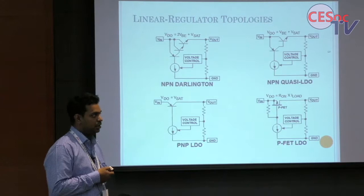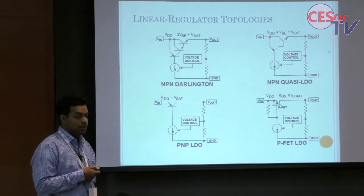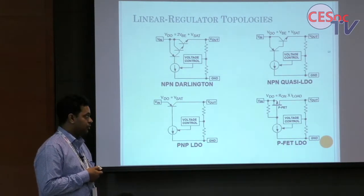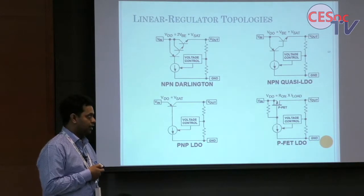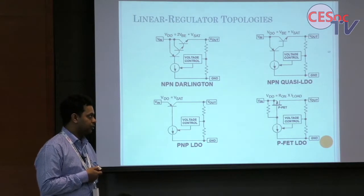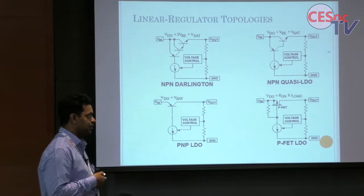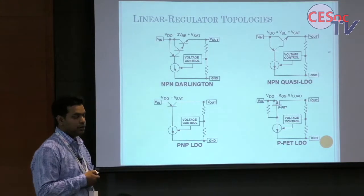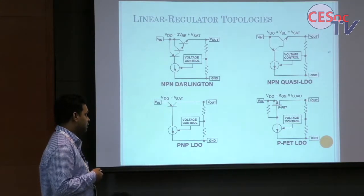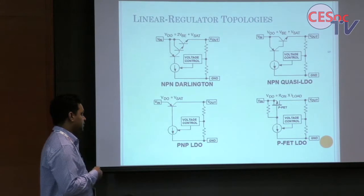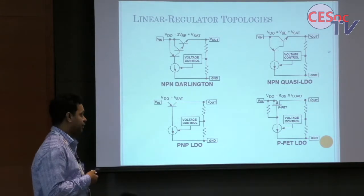Then we have a PFET-based LDO. There, bias current is very low and dropout is also very low — I_load into R_on. But the problem is that for any power MOSFET, V_GS requirement is minimum 3 to 4 volts, so minimum input voltage must be around 5 volts. If required output voltage is 1.25 volts, dropout voltage becomes very huge, again causing power dissipation. So we have chosen the PNP-based topology for high current requirements.